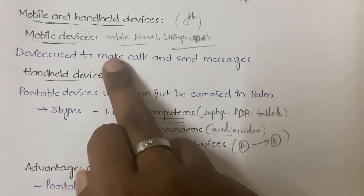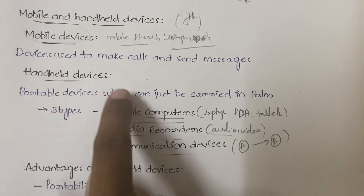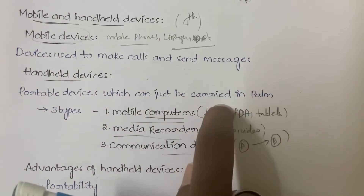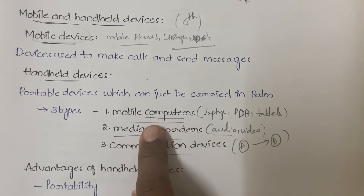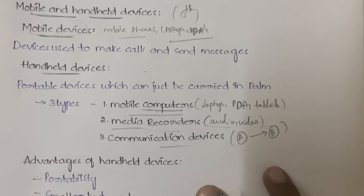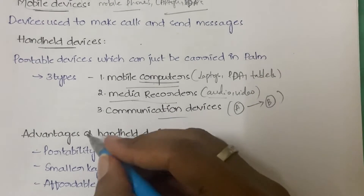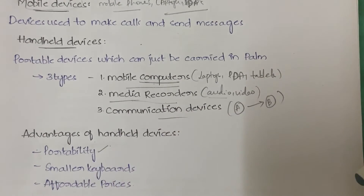So those are the three types of handheld devices: mobile computers, media recorders, and communication devices. Now, what are the advantages of handheld devices? Number one is portability — you can carry them with you wherever you go and use them without much hassle.